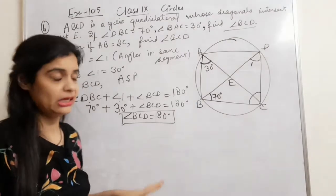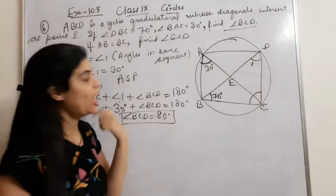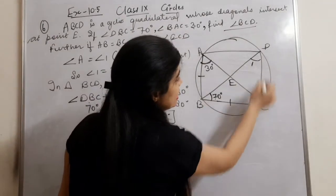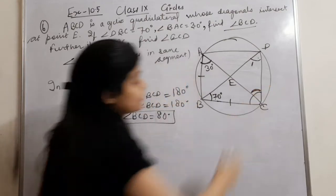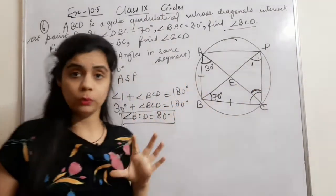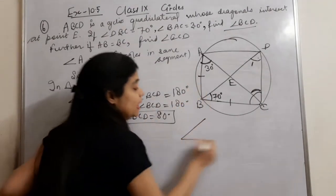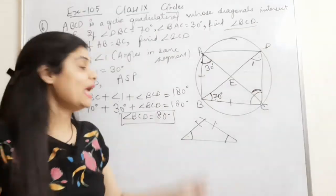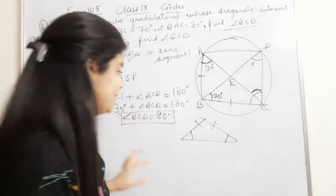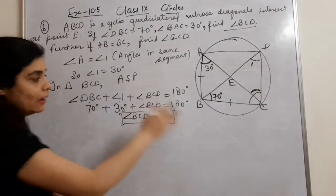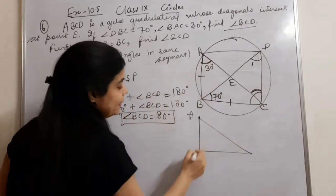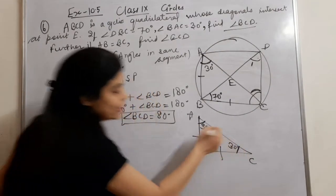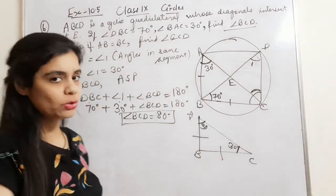Further, if AB equals BC, find angle ECD. If two sides in a triangle are equal, then the angles opposite to those equal sides are equal. In triangle ABC, if AB equals BC, then angle BAC equals angle ACB. Since angle BAC is 30 degrees, angle ACB will also be 30 degrees.